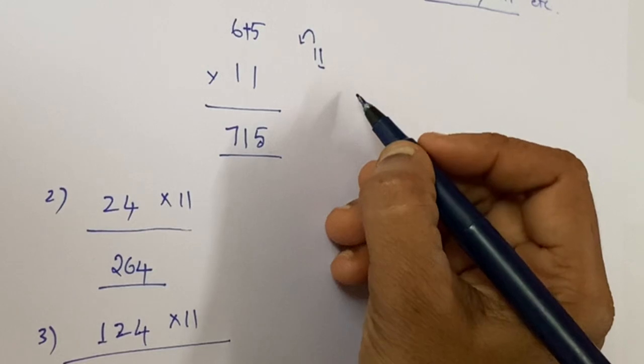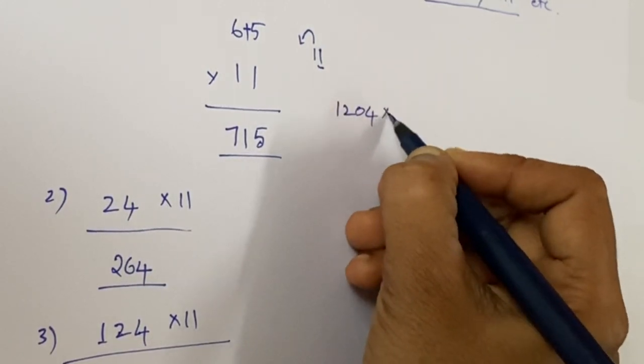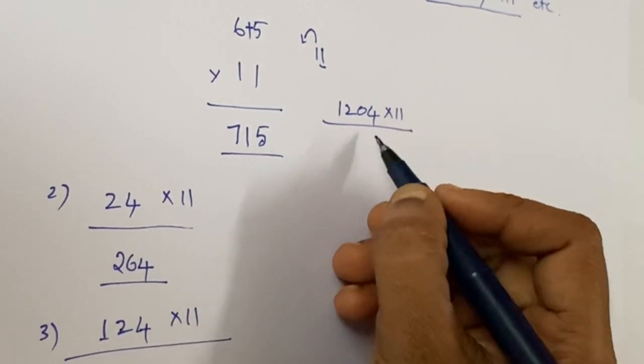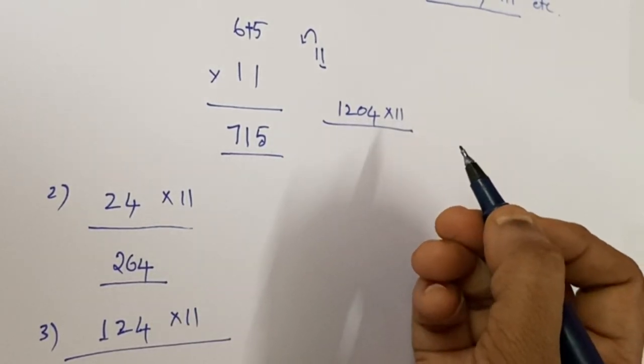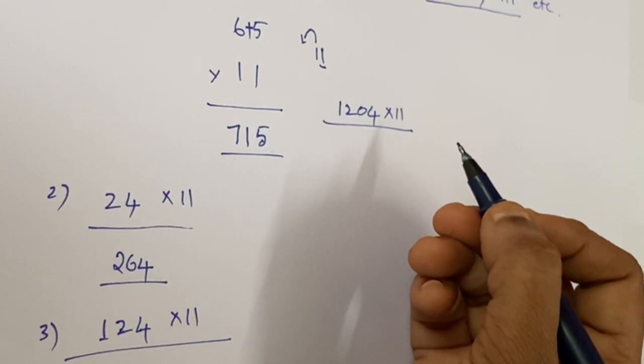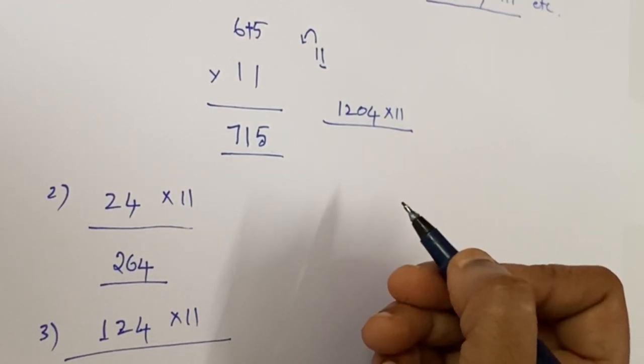Like this you calculate any number with 11. I will give an example—you calculate it and write the answer in the comments. This is 1204 into 11. Take your timer and check how many seconds it will take to calculate in this way compared to the time taken in the traditional method.